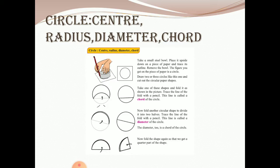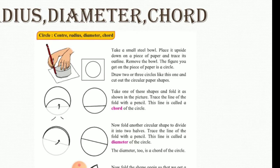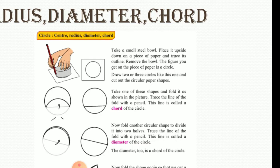We will know more about them a little later, but first we will try and make a circle. So drawing a circle is very simple. You can take any cap of a bottle or take a small steel bowl, place it upside down on a piece of paper and trace its outline. Now remove the bowl. The figure you get on the piece of paper is of the circle. Now draw two or three more circles of this type and keep it with you.